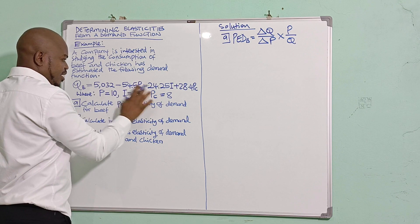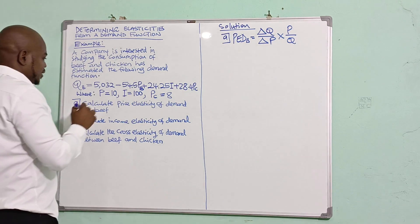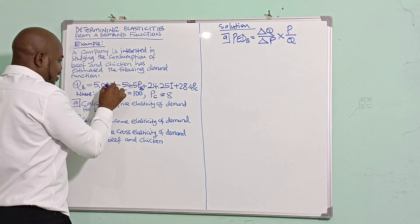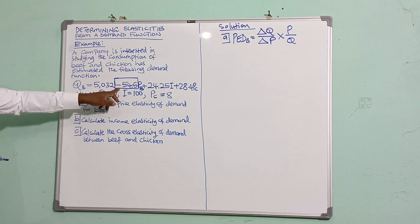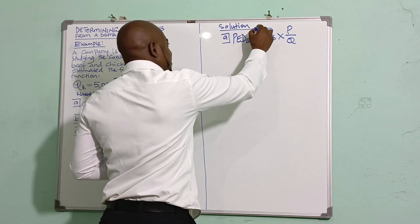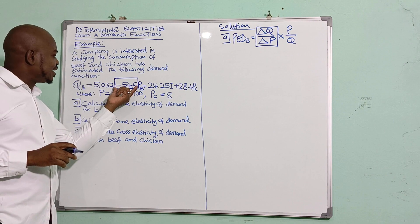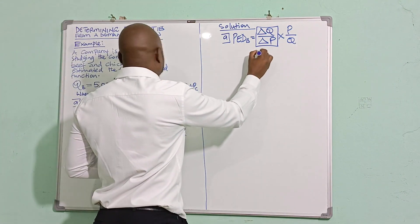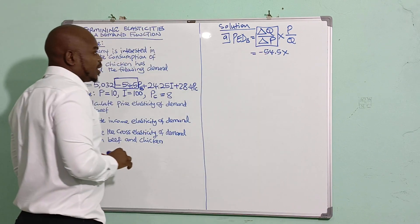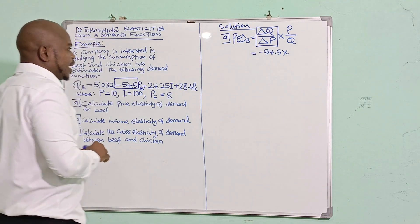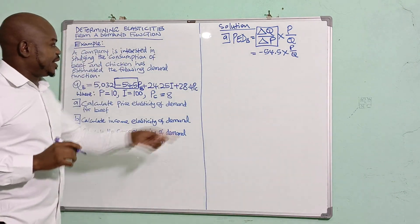In the demand function, the price for beef is P and the price for chicken is PC. The coefficient next to P is the gradient for beef. We replace that gradient with negative 54.5, then multiply by price over quantity. So I need to calculate the quantity first.